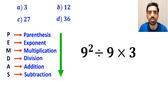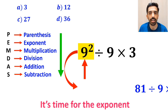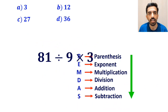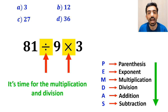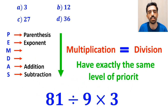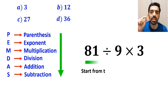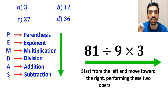Now it's time for the exponent. So instead of this expression, we write 81 ÷ 9 × 3. In the final step, we handle the division and multiplication. It's very important to note that according to the PEMDAS rule, multiplication and division have exactly the same level of priority. The best approach is to start from the left and move toward the right, performing these two operations in order.